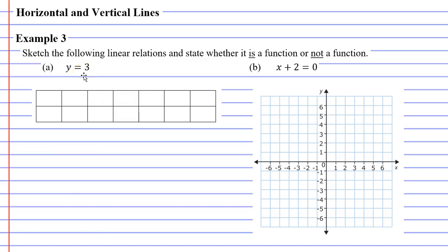Well it helps to look at a table of values. On a table of values we have our x row and our y row, and we pick some x values such as negative 2, negative 1, and so on. So we'll start with the first column. If x is negative 2, what does y equal? Well when we look at the equation it just says that y equals 3, so we write down 3.